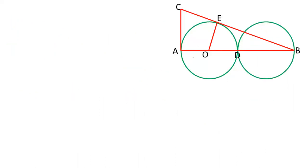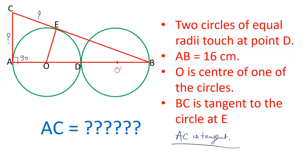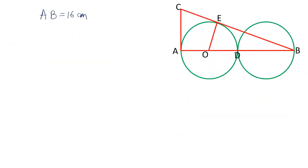Let's write down all the data given. AB is 16 centimeters. AD is the diameter. The two circles have equal radius, so this diameter will be 8, meaning AD is 8, and therefore the radius of each circle is 4. OE is also 4.